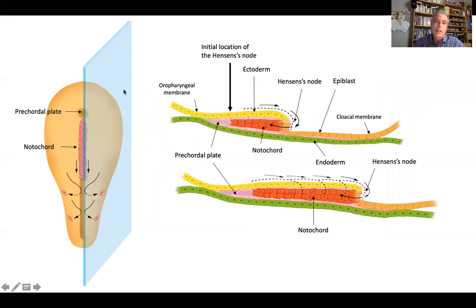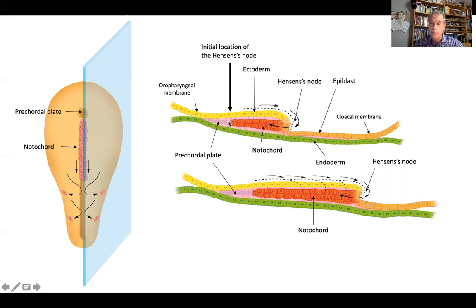If we make a longitudinal section of an embryo, we have the endodermal layer and the most external layer where some cells are ectoderm and some are still epiblastic cells migrating towards the Hensen's node. They fall into the groove and accumulate on the midline to form the axial mesoderm, which is the notochord. Rostral to the notochord we have the prechordal plate. As more cells form the notochord, the Hensen's node moves caudally, progressing the formation of the axial mesoderm.